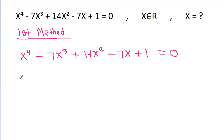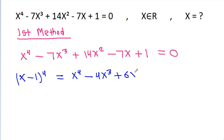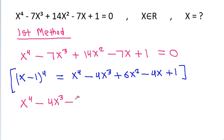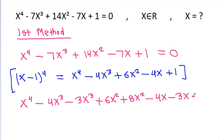We know that (x - 1)⁴ = x⁴ - 4x³ - 6x² - 4x - 1. So x⁴ and -7x³ will be equal to -4x³ - 3x³, and -14x² will be equal to -6x² - 8x². And -7x will be equal to -4x - 3x, minus 1 = 0.